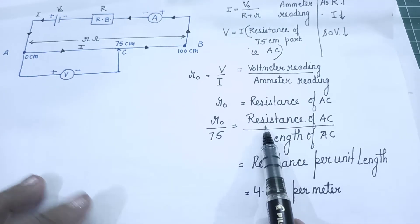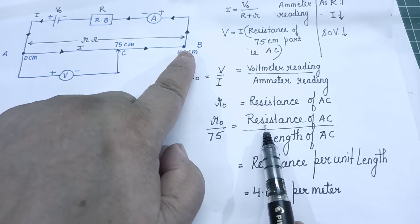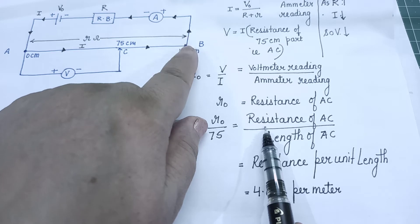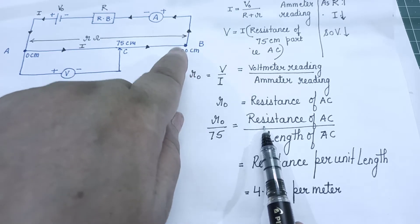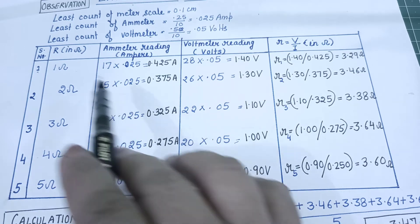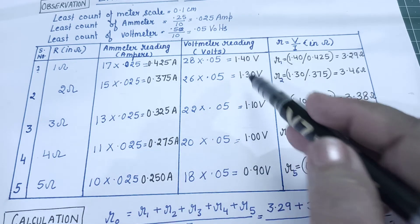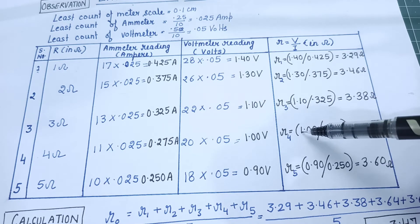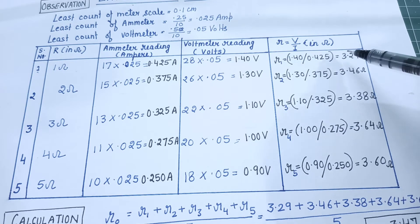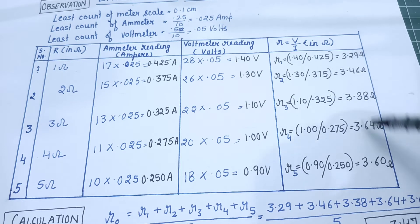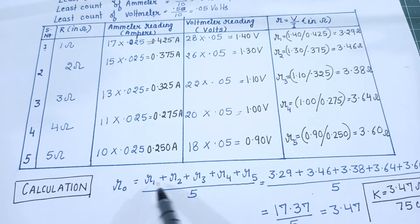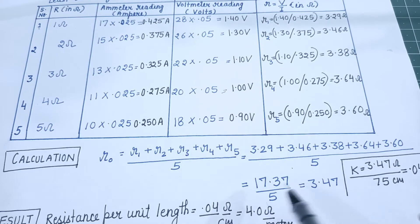The resistance of AB wire is in the lab approximately 4 ohm. So 4 ohm is the resistance of a 1 meter wire, meaning 4 ohm per meter is the resistance per unit length of AB wire. If the calculation is done here — I have calculated ammeter readings and voltmeter readings — then the resistance of the AC part of AB wire, R1, R2, R3, R4, R5 for the five readings, and you can see the values are within the limit of error, not exactly equal but close to each other.